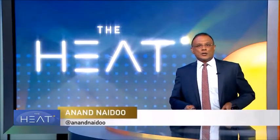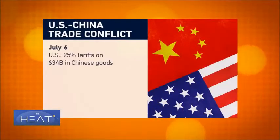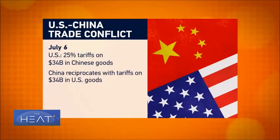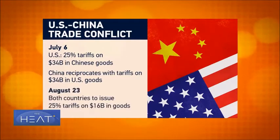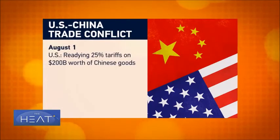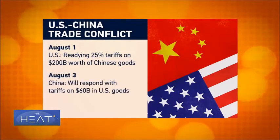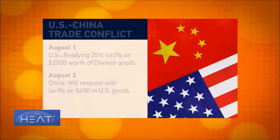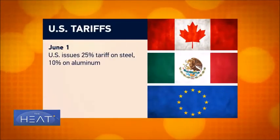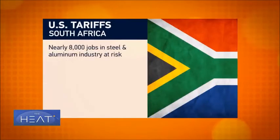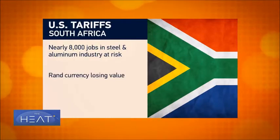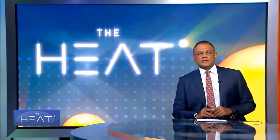There appears to be no end in sight to the U.S.-China trade war. Since July, Washington and Beijing have levied 25% tariffs on each other's goods worth $34 billion, and in two weeks each country will target another $16 billion in goods. President Trump is readying 25% tariffs on $200 billion worth of Chinese goods, and China says it will respond with additional tariffs on $60 billion in U.S. goods. U.S. tariffs on steel and aluminium imports from Canada, Mexico, and the EU are also causing ripple effects — South Africa says nearly 8,000 jobs in its steel and aluminium industry are now at risk, and its currency, the rand, continues to lose value.